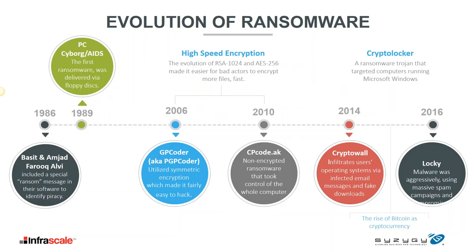A brief history: ransomware is not new and has been around for quite a while. The difference from what we've seen in 2015 and 2016 is that this is the first time a cryptocurrency — Bitcoin — has been used to connect victims and criminals directly together. That's one of the big reasons this is a growing threat: the speed to get a return on investment as a criminal organization is much faster than any other cyber criminal activity.